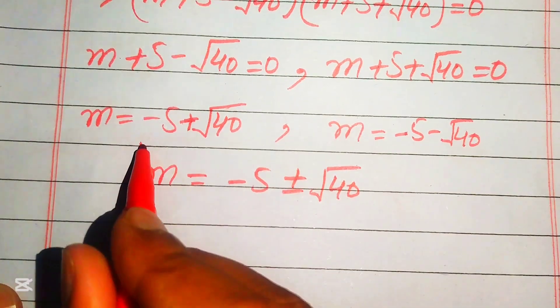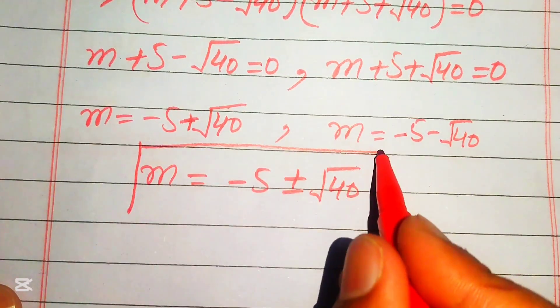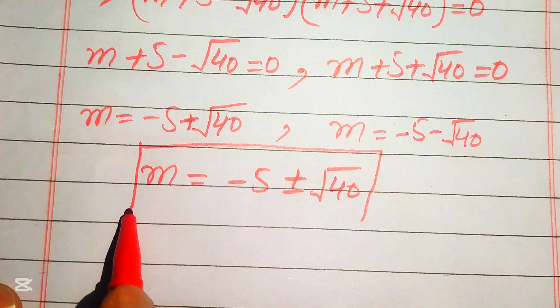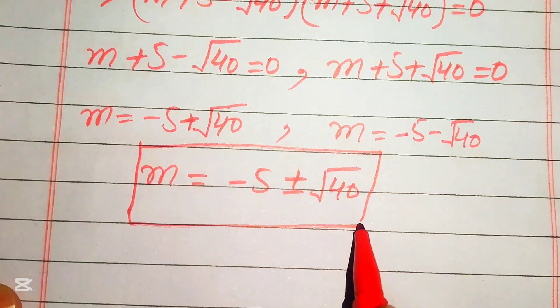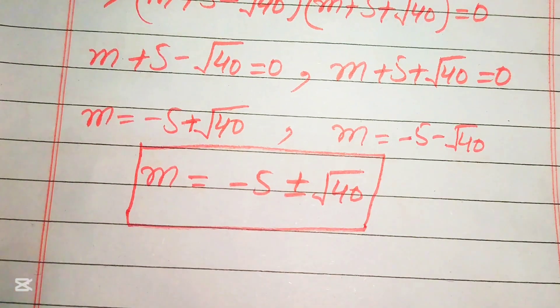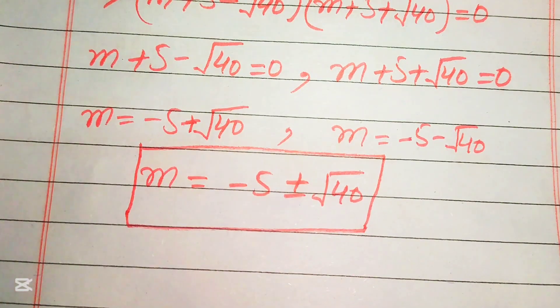So the final answer from method two is also m = −5 ± √40. Thank you so much for watching this video. Please subscribe to my channel for more exciting videos.